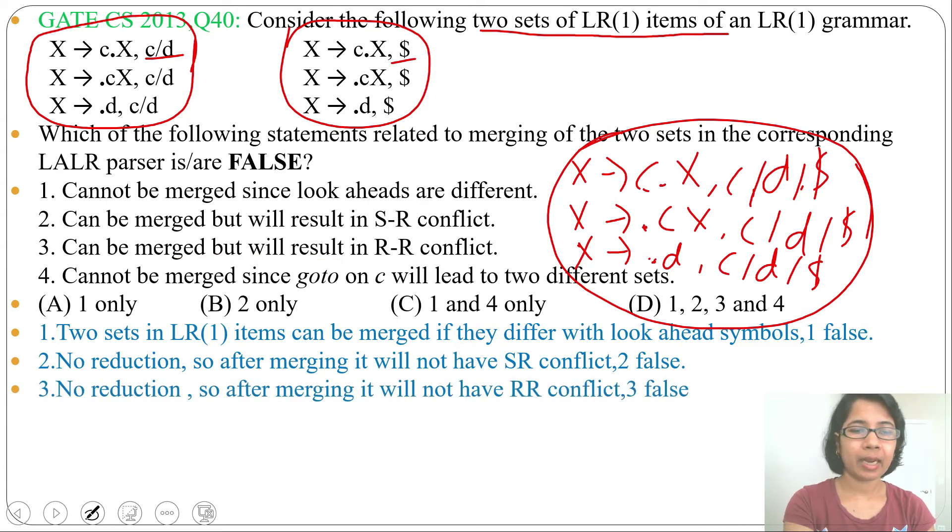Next, statement 4: cannot be merged since goto on c will lead to two different sets. We can merge this. Goto on c will not lead to two different sets, it will go to one set. So that's why this is false.